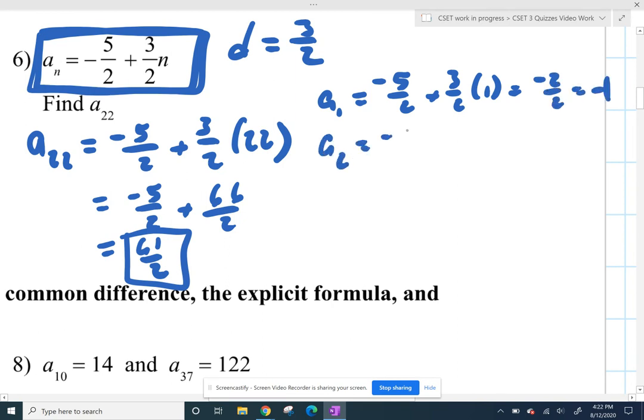And plug in a 2 to get my second term. So 3 halves times 2, so that's plus 6 halves. So that's 1 half. And then I can see that I am adding 3 halves.